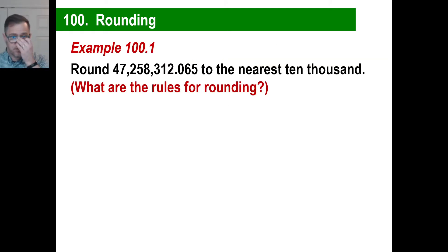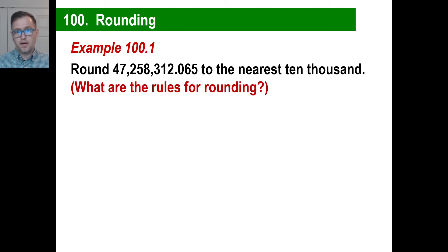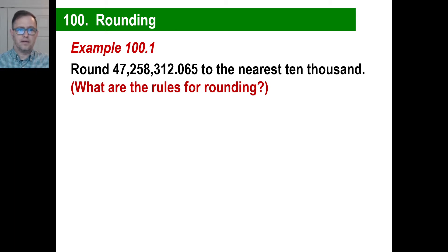Let's round this number to the nearest 10,000. First off, what are the rules for rounding? If a number is 5 or greater, we round up. If it's 4 or less, we round down. So let's do that.